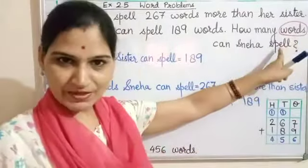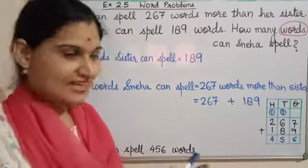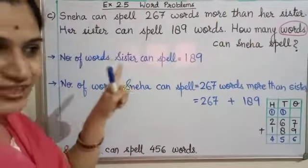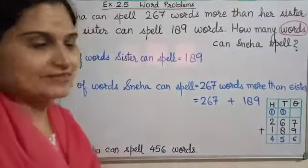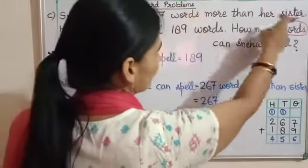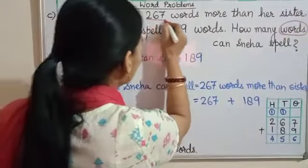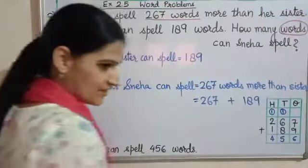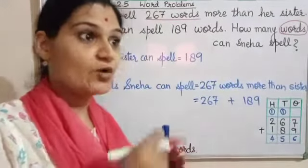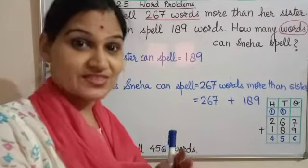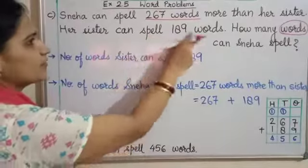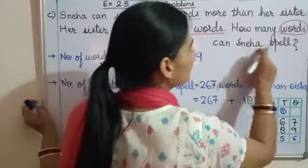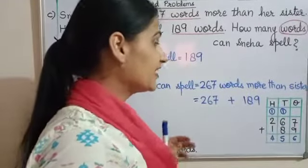Is question mein words ke baad mein ho rahi hai — jo Sneha bol sakti hai aur jo uski sister bol sakti hai. Jo words humne circle kiya hai, words se related koi bhi information milegi — koi numbers — unhein hum underline karenge. Toh dobaara word problem read karte hain: Sneha can spell 267 words more than her sister — 267 words more than her sister, sister se bhi zyada. Her sister can spell 189 words — sister is spelling 189 words. Hame words ke baad mein information mili — isko bhi underline karenge.